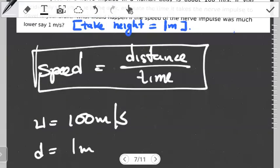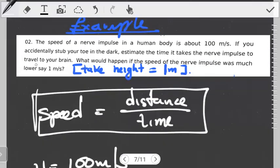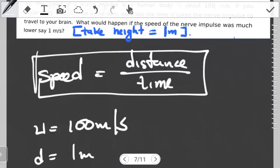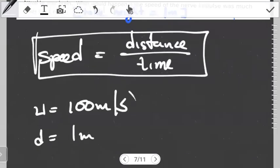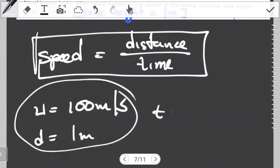Here they want us to estimate how long it takes the impulse to travel to your brain. So making a slight approximation that the impulse has to travel the entire height of the person, one meter. Notice that we actually have everything that we need except what we're looking for, time.